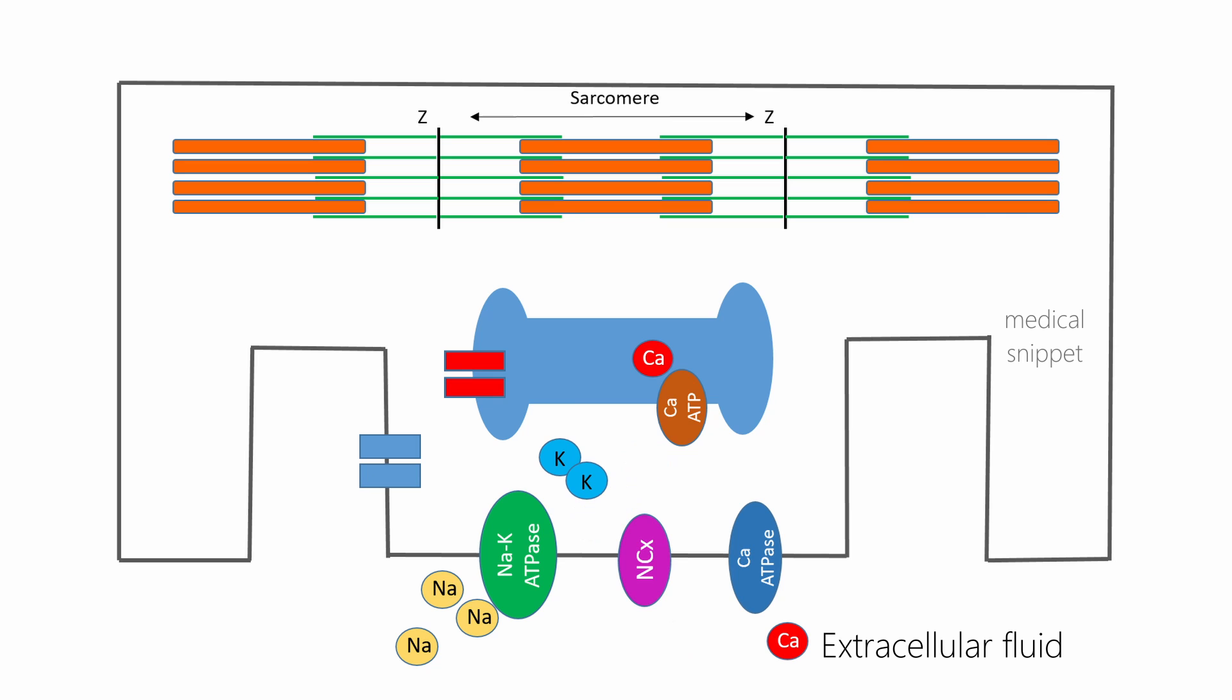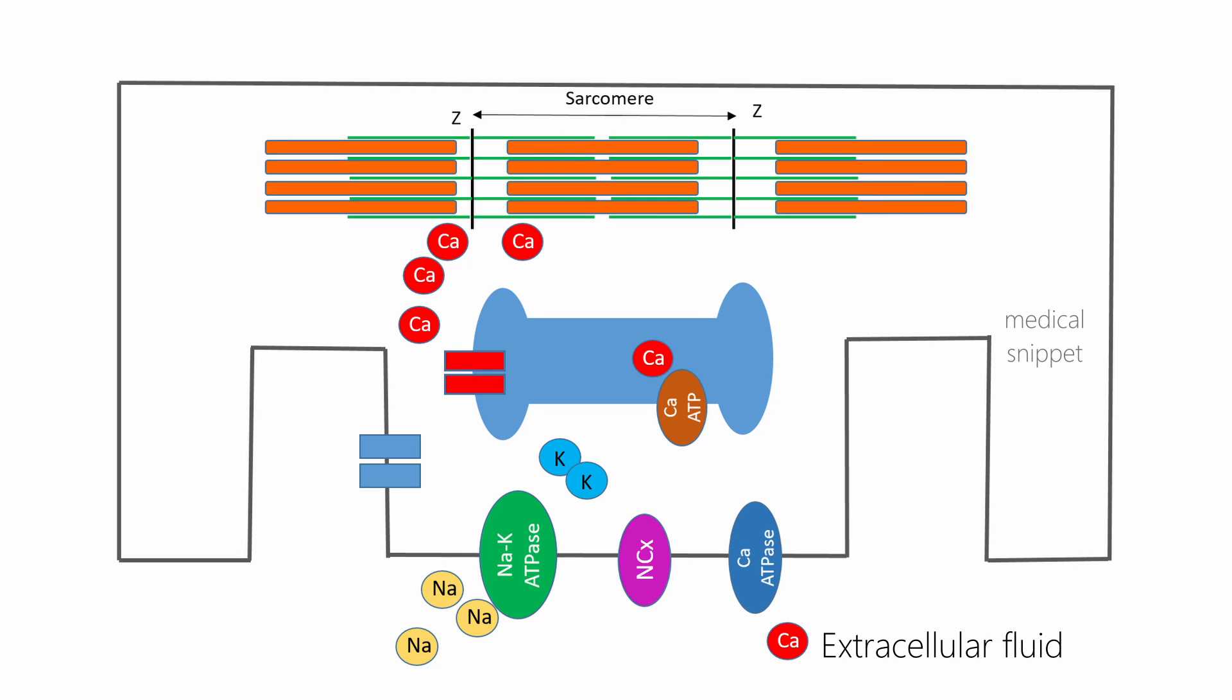T-tubules contain extracellular fluid, so it contains calcium, and L-tubules are also rich in calcium. When depolarization occurs, the voltage-gated calcium channel opens and allows calcium from extracellular fluid to enter sarcoplasm. This intracellular calcium activates the voltage-gated calcium channel in terminal cisterns of L-tubules, so there is increase in calcium concentration in sarcoplasm. These calcium then bind to troponin C and start the process of excitation-contraction coupling, and cause myocardial contraction.